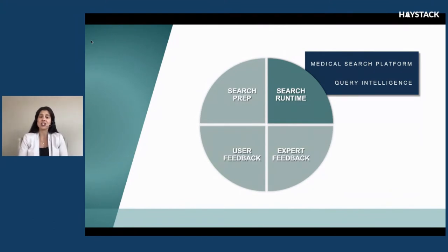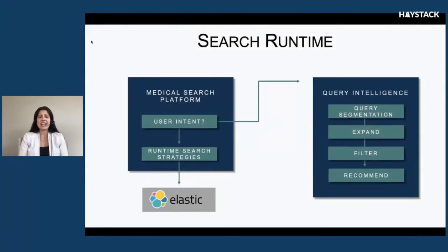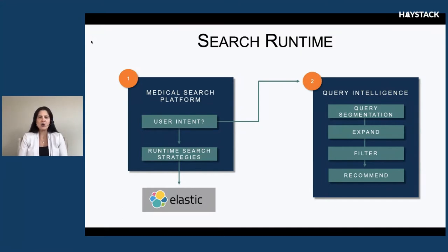Let's now talk about our search runtime environment. This is an architectural overview. We receive a request against the medical search platform, and the first thing it does is try to understand the user's intent. It sends the query off to query intelligence, which performs a series of operations: first it needs to segment the query, then make decisions — should it expand the criteria, narrow it, or keep it? Ultimately, query intelligence returns a set of recommendations to the medical search platform so it can construct the best runtime search strategy against Elasticsearch.